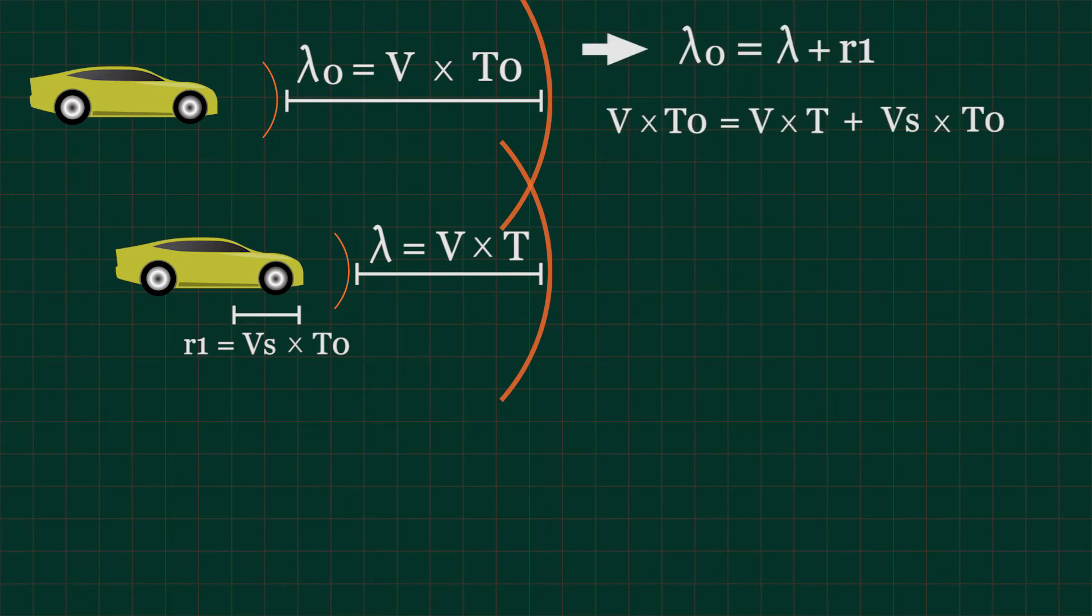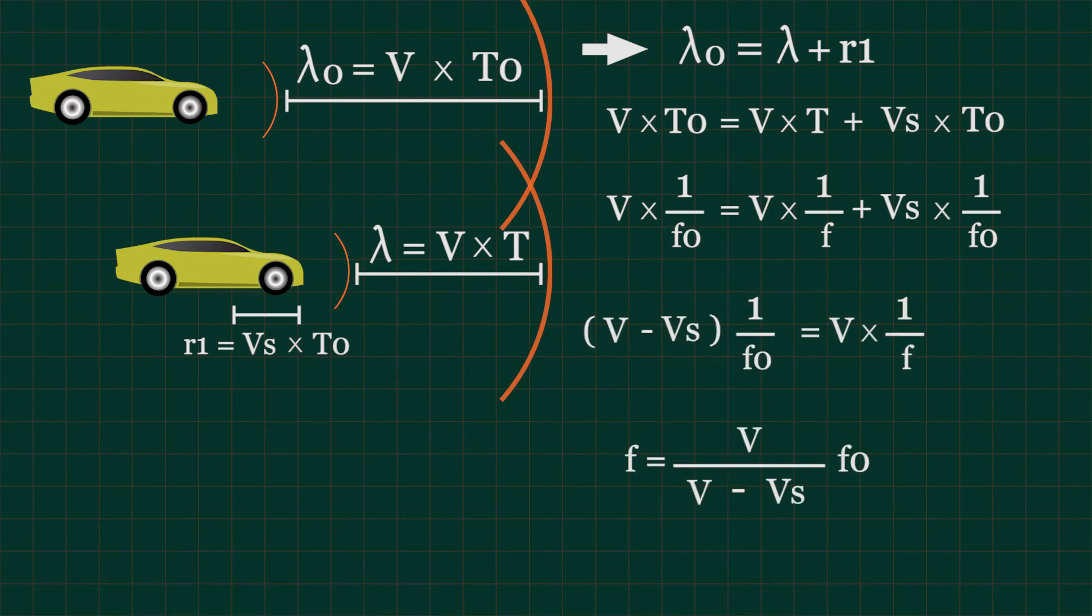Because the oscillation period t is equal to 1 divided by frequency, we will obtain this, and with a small change we can find the Doppler formula for this scenario.